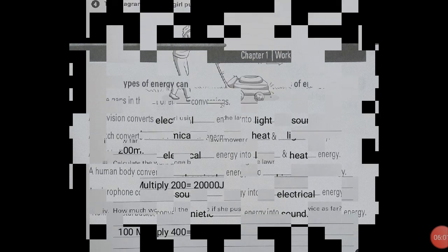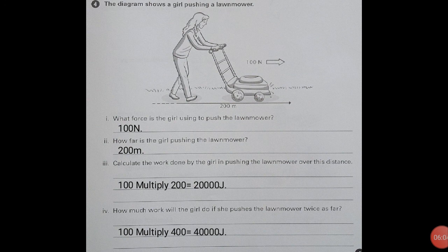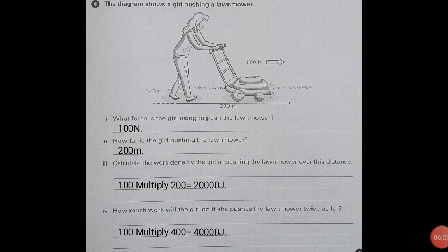The diagram shows a girl pushing a lawnmower. Here you can see a girl pushing a lawnmower. What force is the girl using to push the lawnmower? Hundred newtons. How far is the girl pushing the lawnmower? Two hundred meters. Calculate the work done by the girl in pushing the lawnmower over the distance. We studied that work equals force into displacement. Multiply force by distance: hundred multiply by two hundred gives twenty thousand joules.